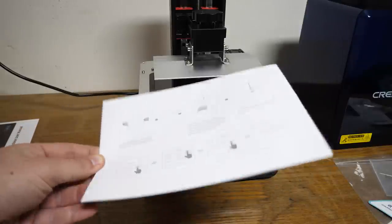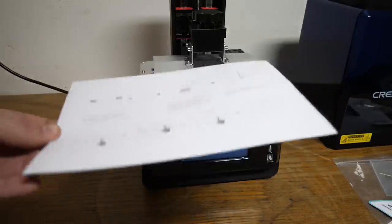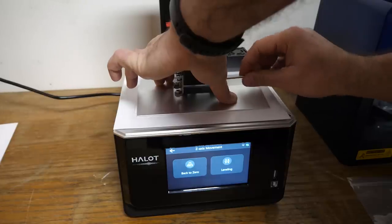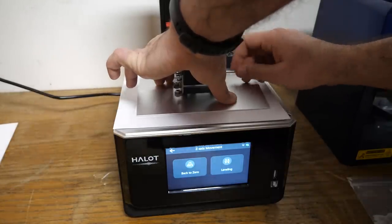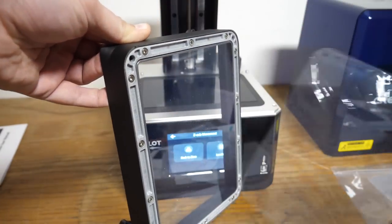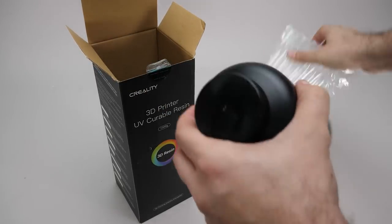Time for leveling. There's a thick sheet of paper for that. There are 4 screws to loosen, then the platform goes down. You need to push the bed down firmly and tighten the screws, that's it. Here is the vat. You need to remove the plastic cover from the bottom. Here is the resin from Creality that we use.